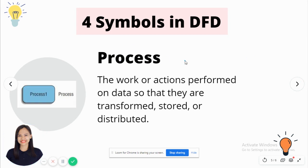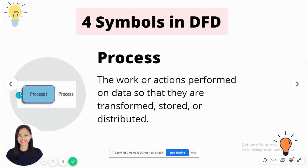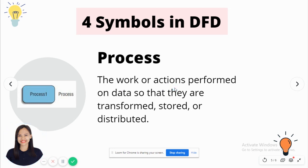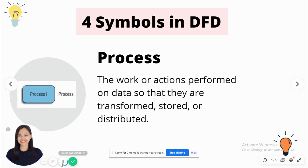Third is the process. This is the symbol of the process. It is a square that has no edges. Process is the work or action performed on data so that they are transformed, stored, or distributed.